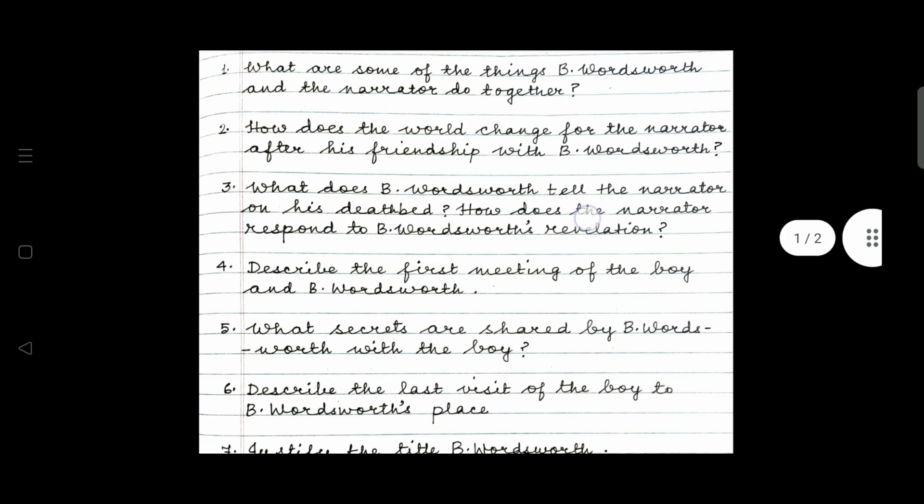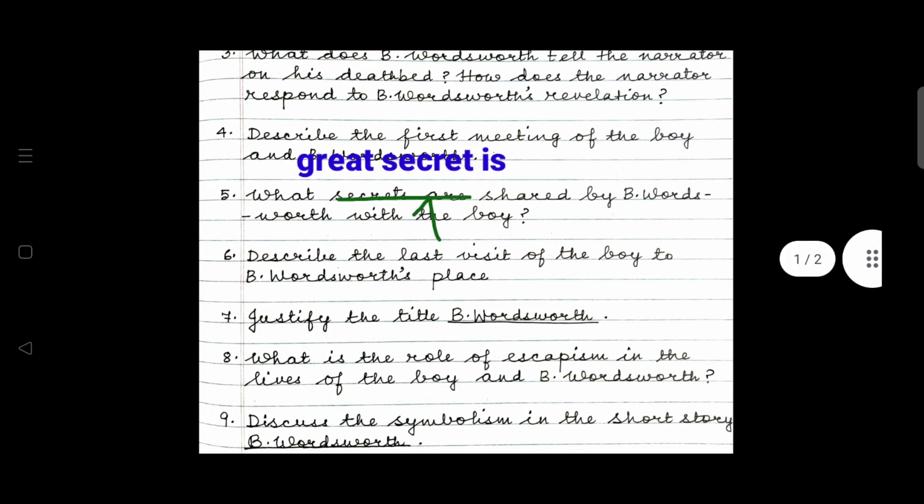This is very easy. Turn to page number 116 and you will get the answer. The first meeting of the boy and B. Wordsworth. I asked, what do you want? He said, I want to watch your bees. And how the boy's mother reacted to B. Wordsworth and how was the boy's reaction to B. Wordsworth different from that of the mother? Question five. What is the great secret shared by B. Wordsworth with the boy? Where is it? The great secret? I will tell you a great secret. I said, it's really secret? At the moment, yes. I looked at him and he looked at me. He said, this is just between you and me. Remember, I am writing a poem. Oh, I was disappointed. It's on page number 121.